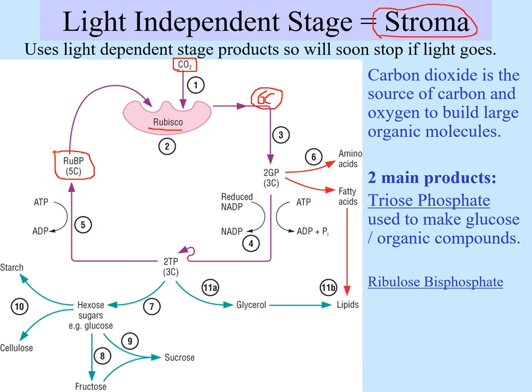However, this six carbon compound is very unstable, so it will break down into two glycerate-3-phosphate molecules, or GP. These are three carbon compounds. So we've gone from ribulose bisphosphate, added carbon dioxide to it, made a six carbon compound, and that breaks down into two three-carbon compounds called glycerate phosphate.